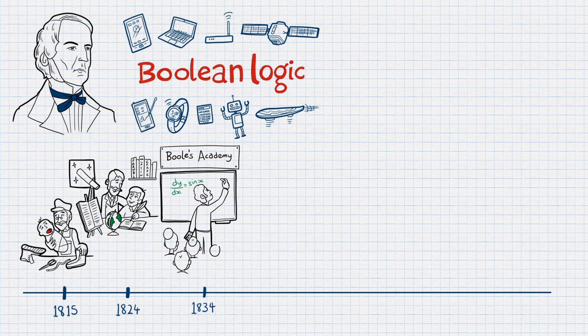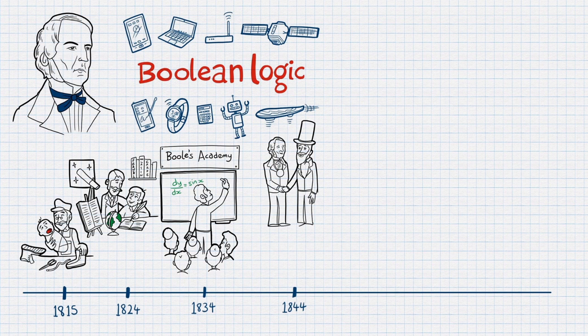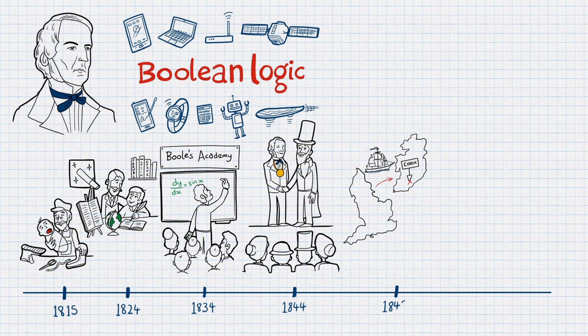George became a teacher at 16 and set up his own school at the age of 19. George was a self-taught mathematician and although he never got the opportunity to go to university, he was awarded the Gold Medal by the Royal Society in London for his outstanding research in mathematics.